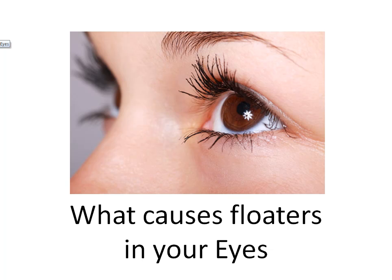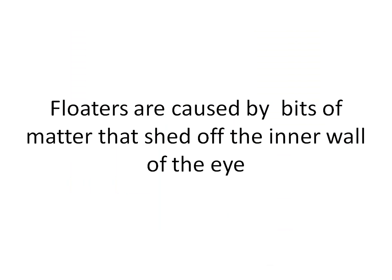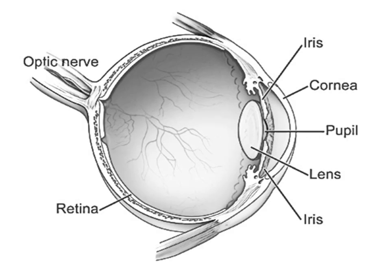What causes floaters in your eyes? Floaters are caused by bits of matter that shed off the inner wall of the eye. The front side of the eye has a lens which directs an image through the vitreous humor, which is the jelly-like liquid in the center of the eye, onto the back of the eye, which is called the retina.